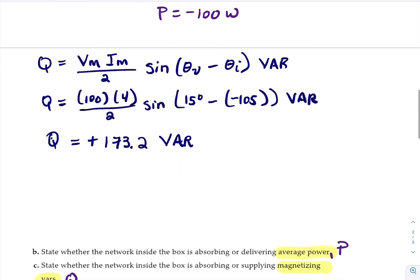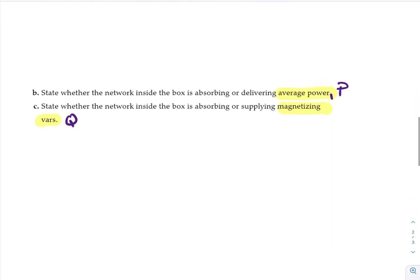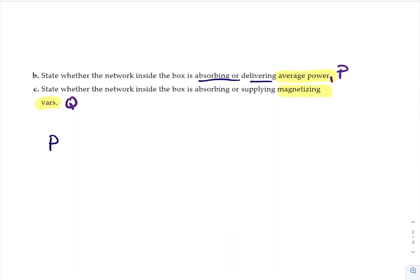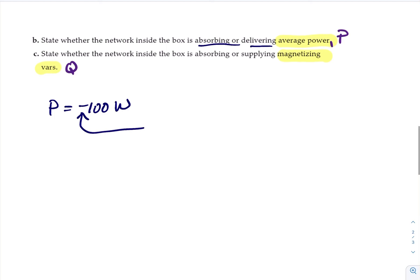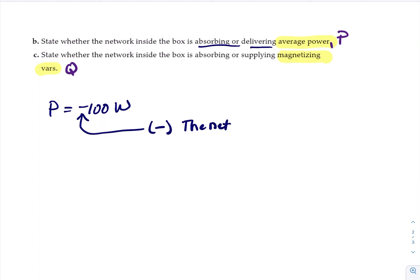So the next part is asking state whether the network inside the box is absorbing or delivering average power. Well, we said our average power is P equals minus 100 watts. And since the value of P here is negative, that means the network inside the box is delivering average power to the terminals.